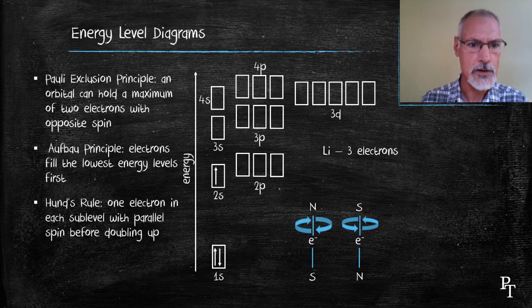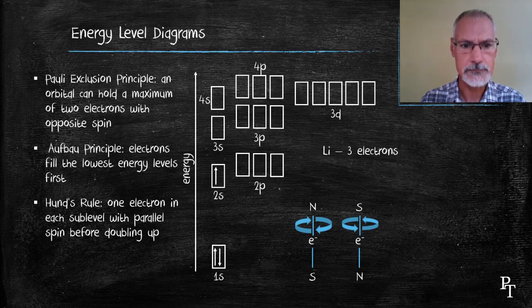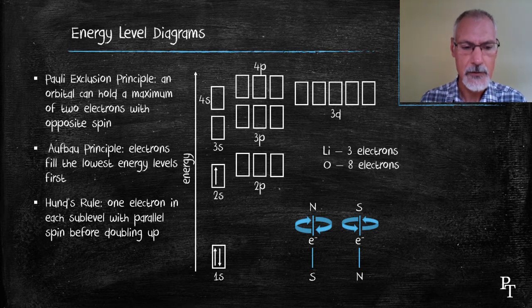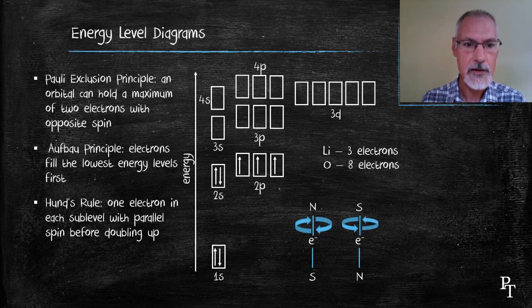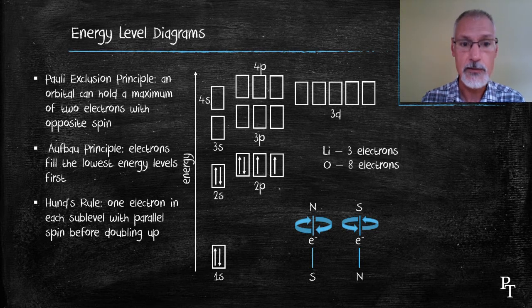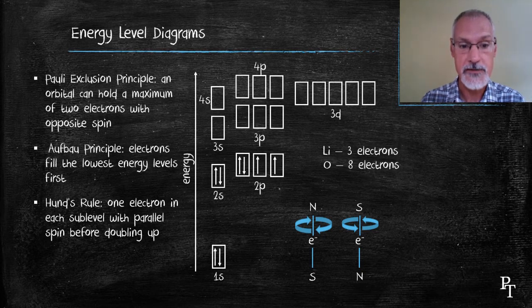I'm going to add a third rule called Hund's rule: one electron must be in each sub-level with parallel spin before doubling up. Let's look at what that means by taking a look at oxygen with eight electrons. I have positioned three of the electrons from lithium. I'm going to add the fourth, fifth, sixth, and seventh electron. There you can see Hund's rule at the 2p energy level — I have to put one electron in each of those orbits spinning in the same direction before I put in the eighth electron, which goes in that first p orbital. The idea is you have to put one in each orbital first. This is the energy level diagram for oxygen.